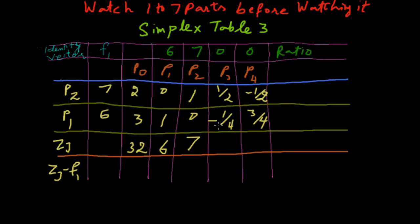And if we deduct F1 value from ZJ, we calculate 0, 0, 2, 1. So ZJ minus F1 is positive or 0.